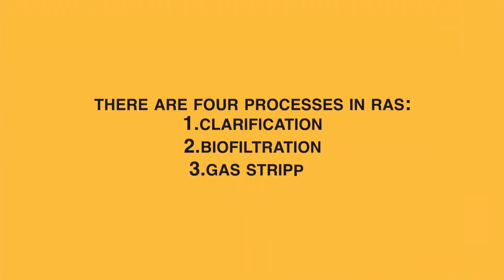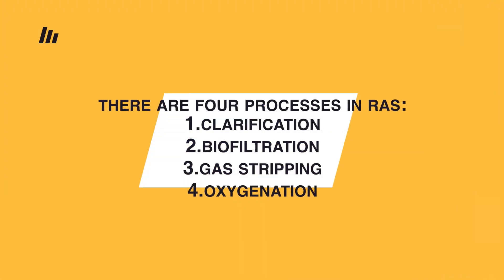Let's cover the four processes of a recirculating aquaculture system. They can be divided into clarification, biofiltration, gas stripping, and oxygenation.